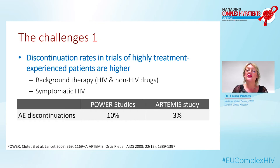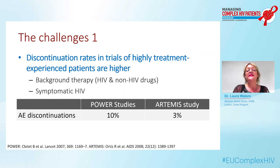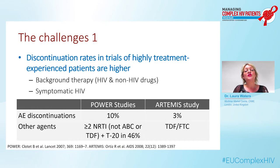POWER was in highly treatment-experienced people and ARTEMIS was a first-line trial population. If we look at discontinuations for adverse events in the darunavir arms of these studies, it was 10% in POWER and just 3% in ARTEMIS. POWER used twice-daily darunavir and ARTEMIS was once daily — that may account for some difference — but I think the main driver is the background regimens. In ARTEMIS that was a simple two-NRTI backbone of TDF and FTC. In POWER, people took at least two NRTIs but this did not include abacavir or TDF, so it included older and less well-tolerated NRTIs, plus almost half the participants were taking T20 subcutaneous injection.